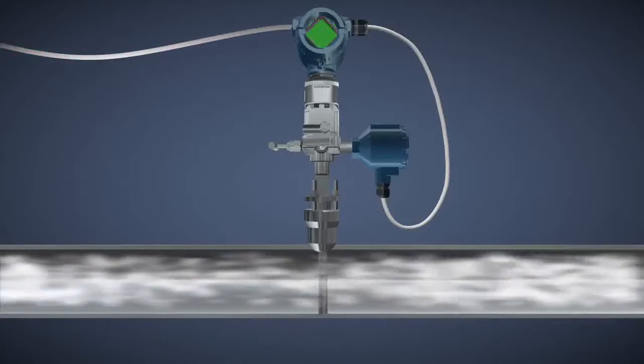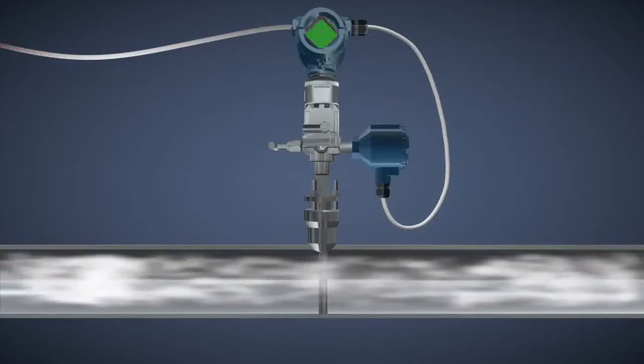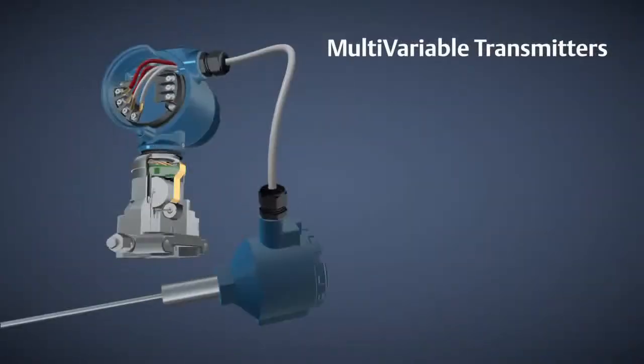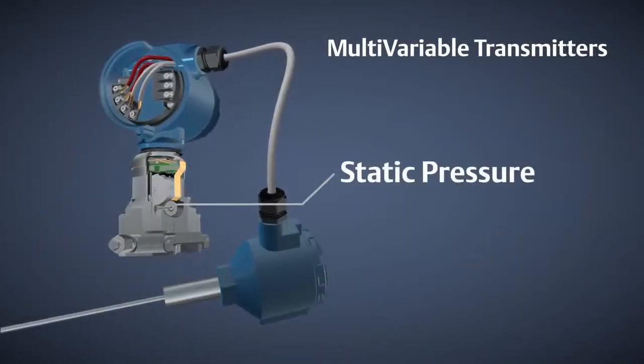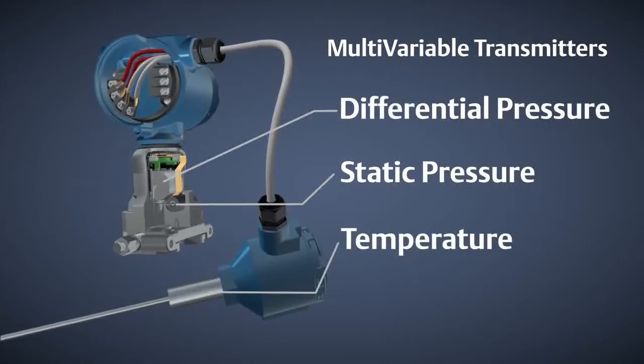Today's advanced multivariable transmitters perform a compensated mass flow calculation in the transmitter of the integrated flow meter. The multivariable transmitter measures static pressure, differential pressure, and process temperature in one device.